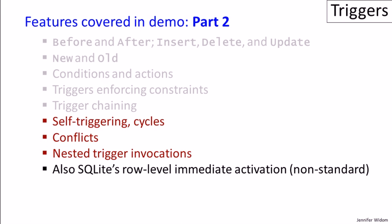In the SQL standard, all triggers are activated at the end of the commands, even if they modify multiple rows. Whereas in SQLite, and also in MySQL, triggers are activated immediately after each row-level modification.